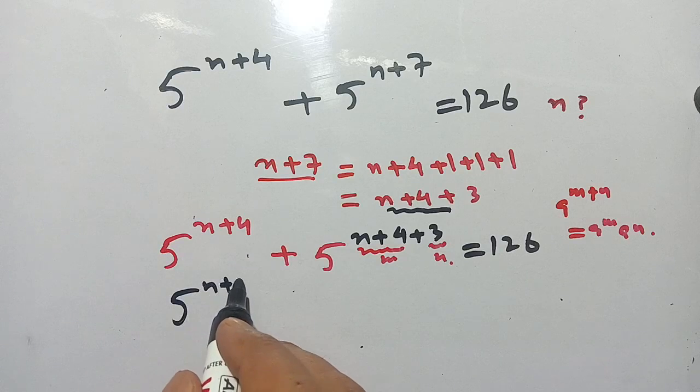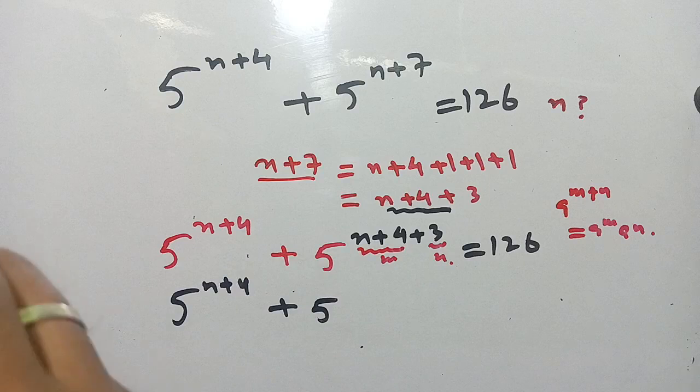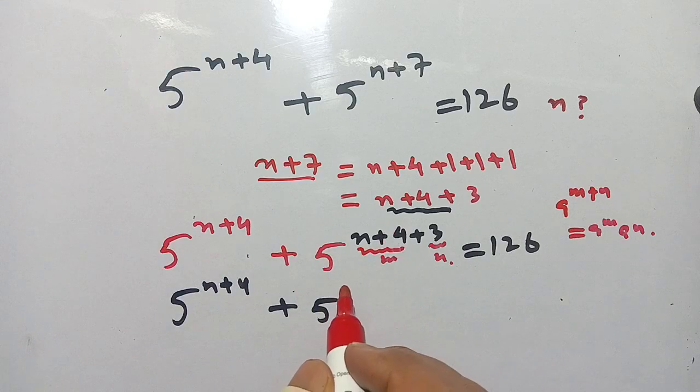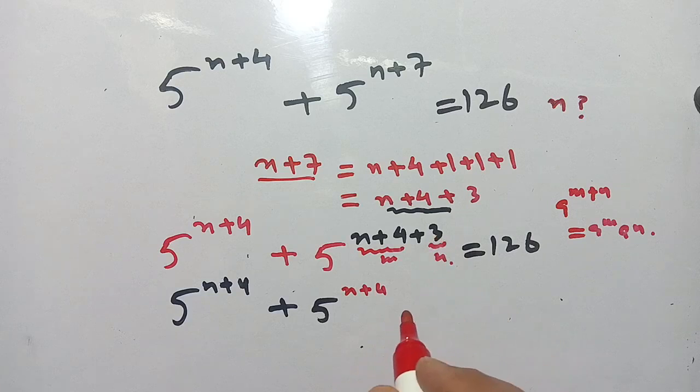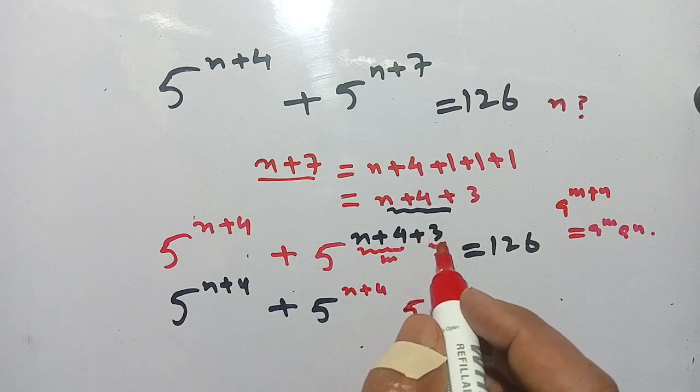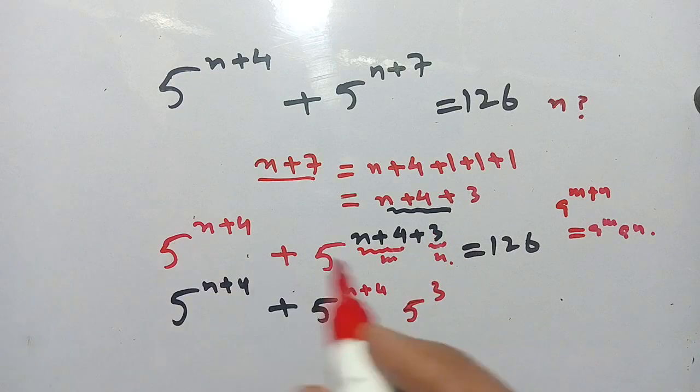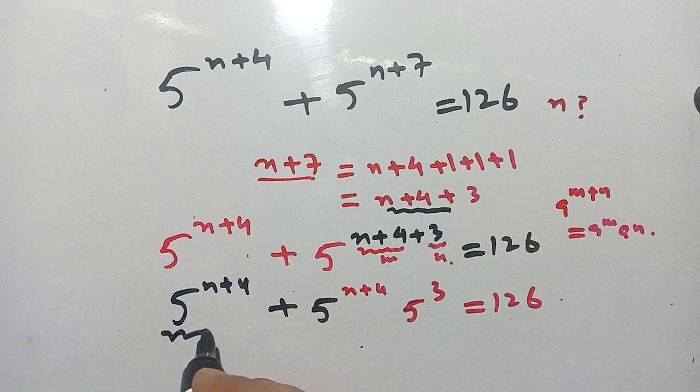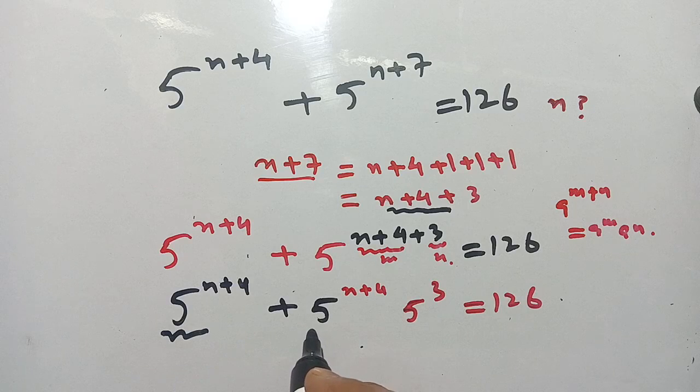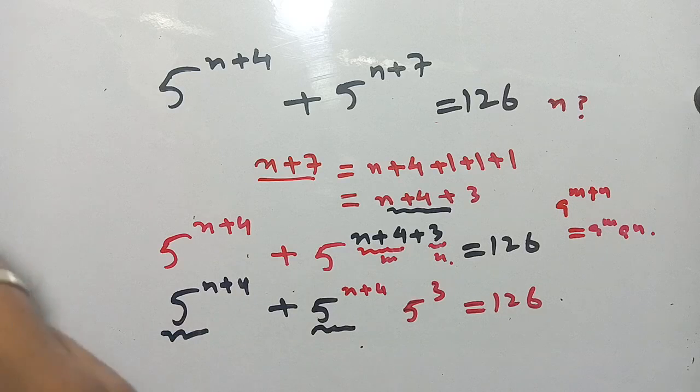Now we have 5 power n+4 plus 5 power n+4 times 5 power 3 is equal to 126. And you see that 5 power n+4 is common and we can take it out. We get 5 power n+4 times...